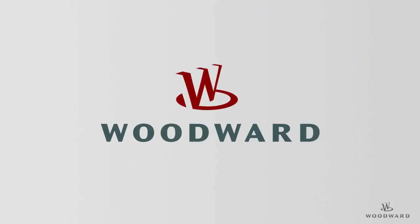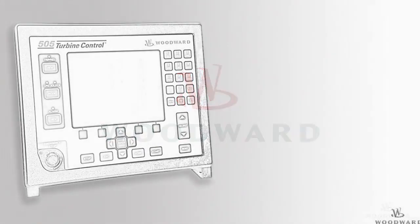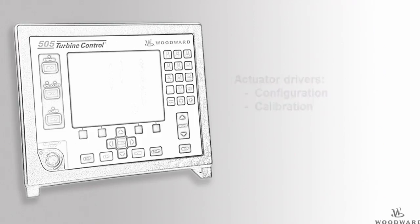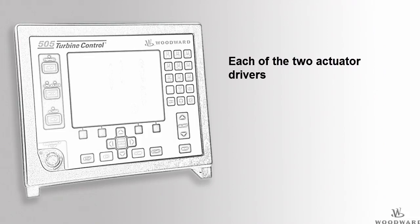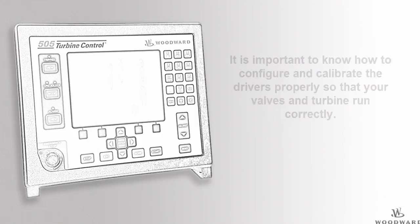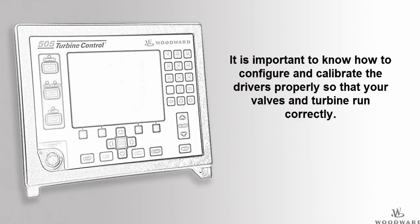Hello and welcome to the 505 tutorial for configuring and calibrating actuator drivers. In this tutorial we will review the configuration and calibration of actuator drivers. The 505 provides an isolated group of two actuator drivers that can be configured to 4 to 20 or 0 to 200 milliamp output ranges.